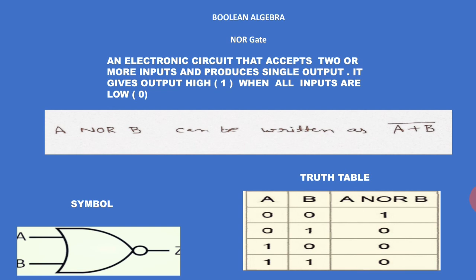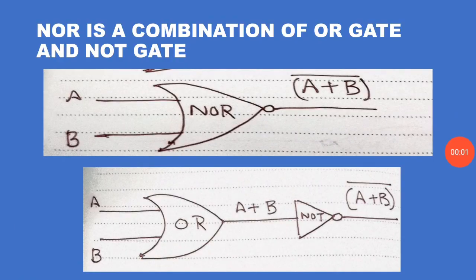For input variables A and B, when the combination is zero-zero, the output is one; for the rest of the rows the output is zero. A NOR B can be written as the complement of A or B. In the symbol of the NOR gate you can observe that the bubble of the NOT gate is placed after the OR gate. NOR gate is a combination of OR gate and NOT gate — the output of the OR gate is passed through the NOT gate, producing the complement of OR.